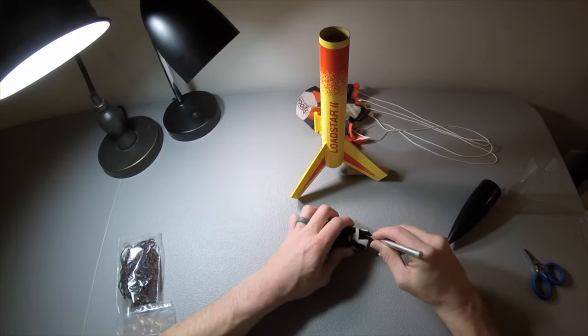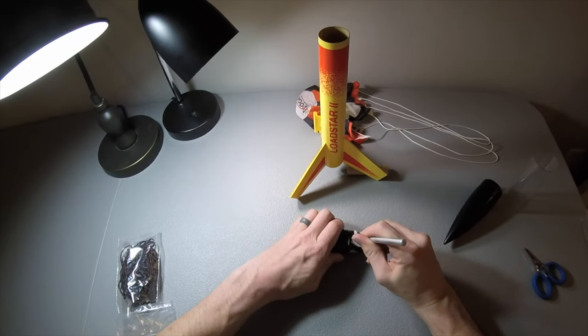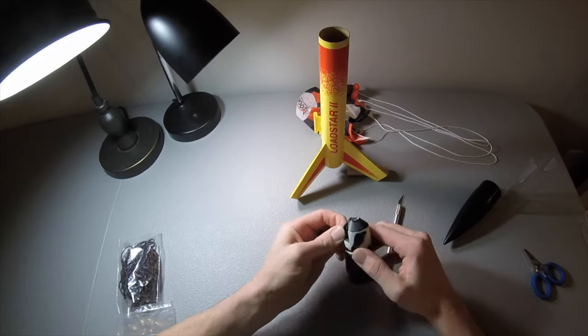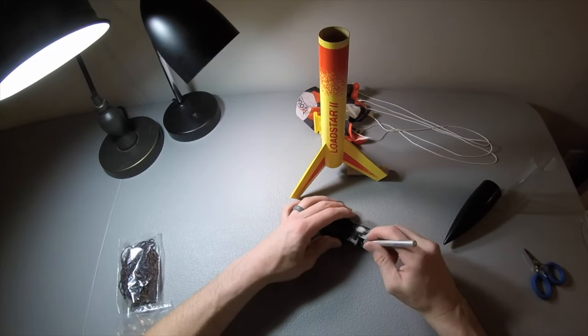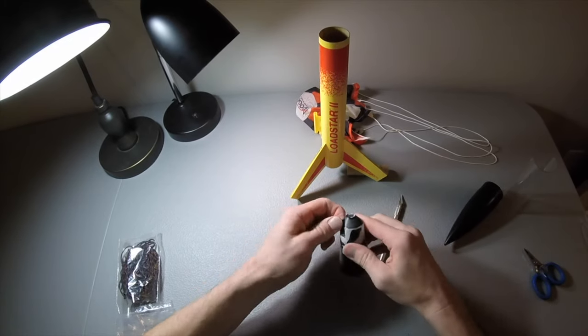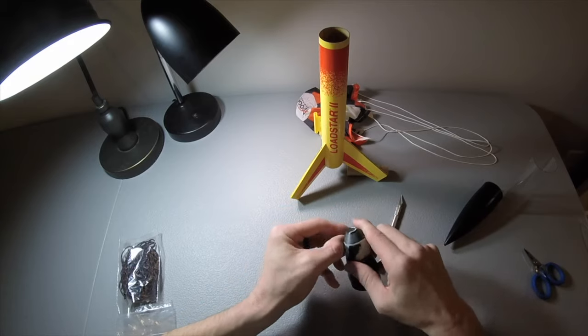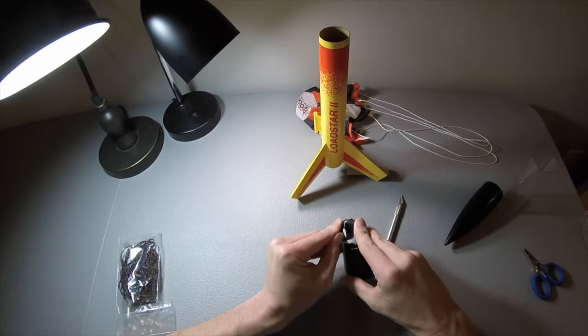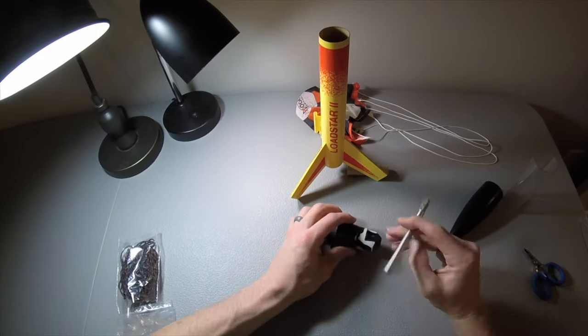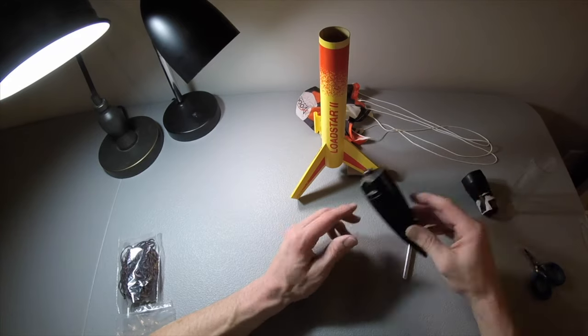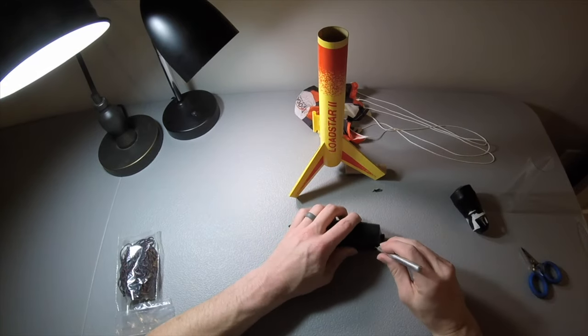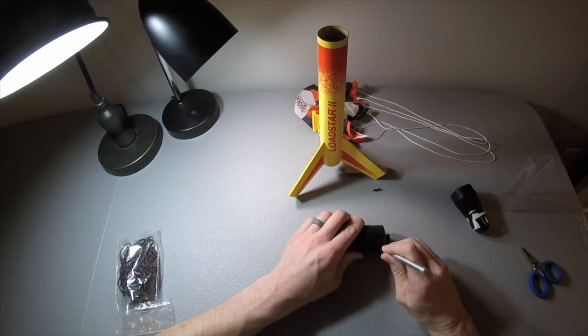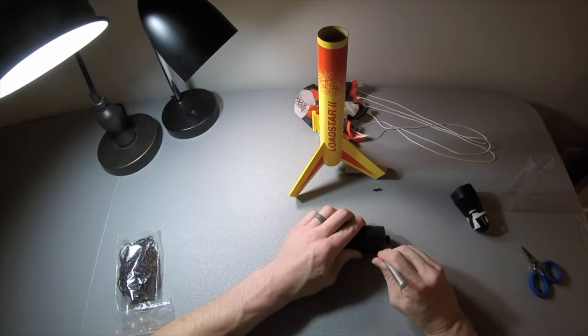Also note that the part of the coupler that goes into the body tube I had spray painted and then had to sand off because the thickness of the paint made the fit too tight. So don't do what I did. Tape that section off and that way you don't have to do the extra work of sanding the paint off.